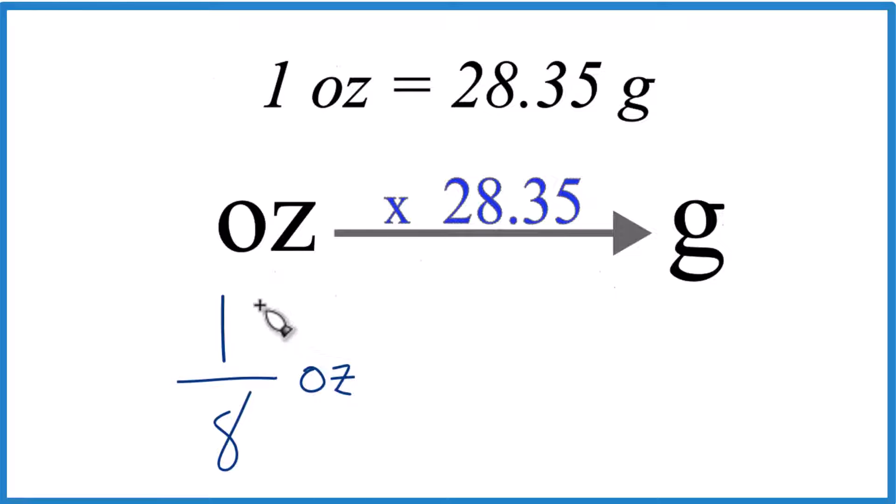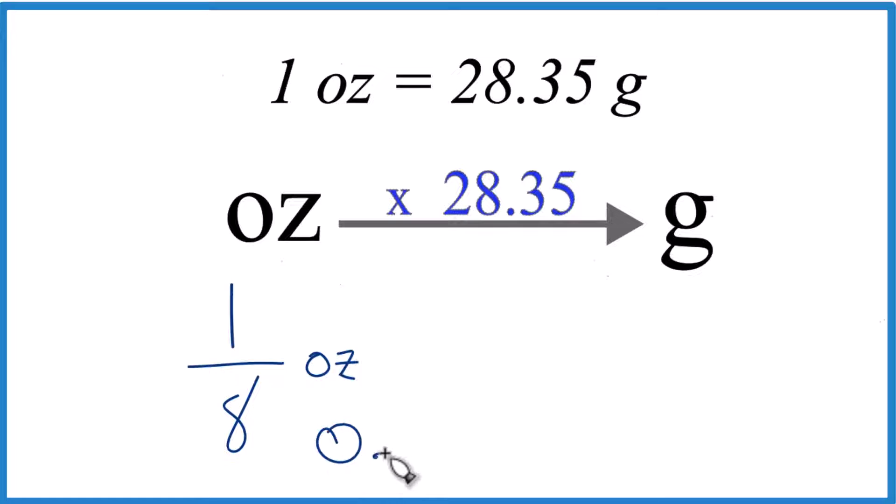The easiest thing is to convert this to a decimal first. Just take 1 and divide it by 8 on your calculator and you'll get 0.125.